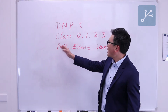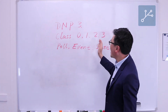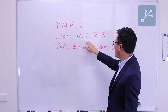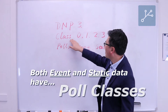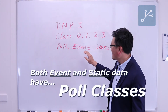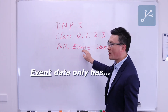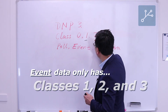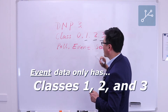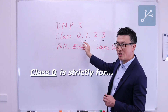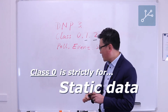As we all know, DMP3 has different class poles: class 0, 1, 2, and 3. Why is there a pole class for all this data? The event data only applies to class 1, 2, and 3. And class 0 is strictly applied for static data.